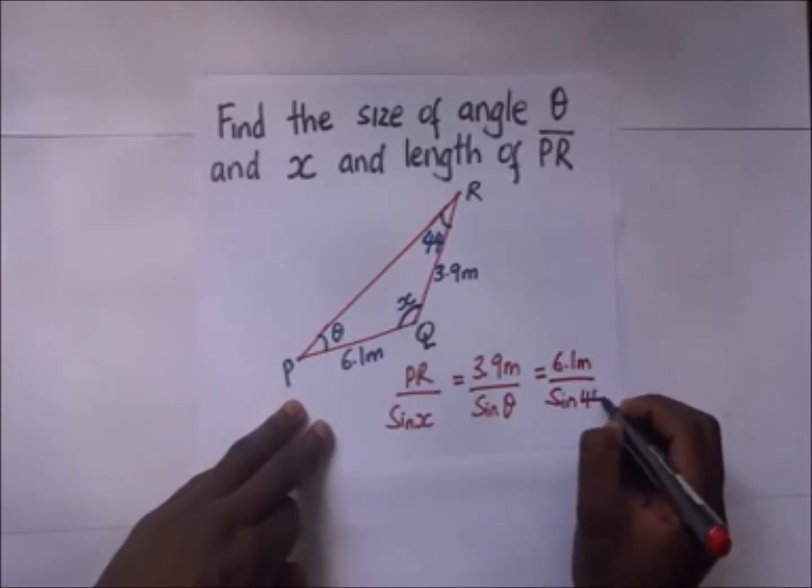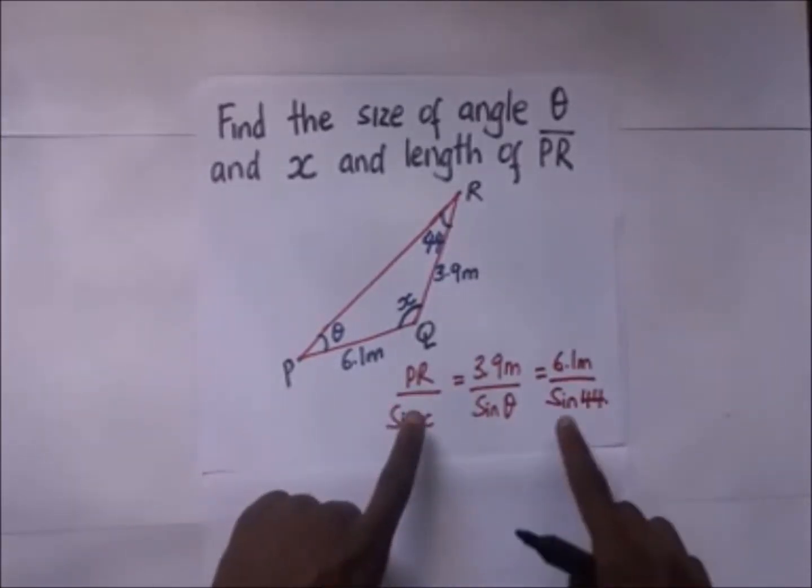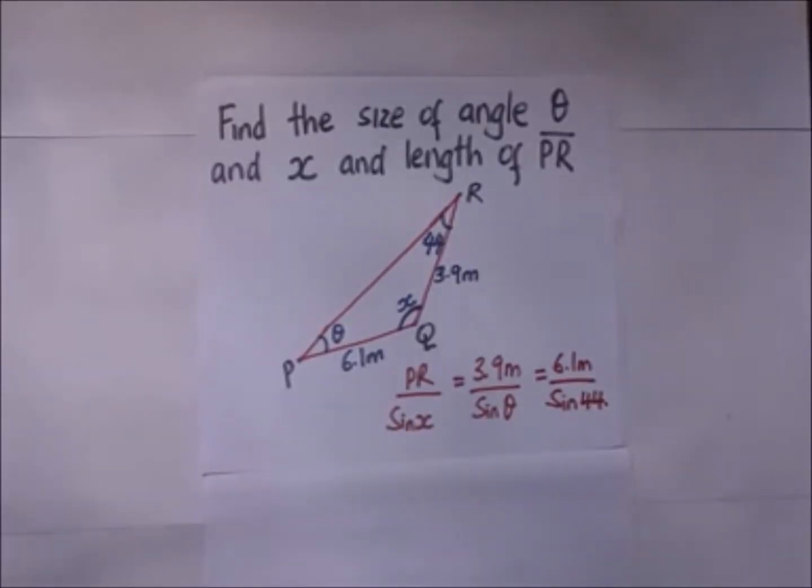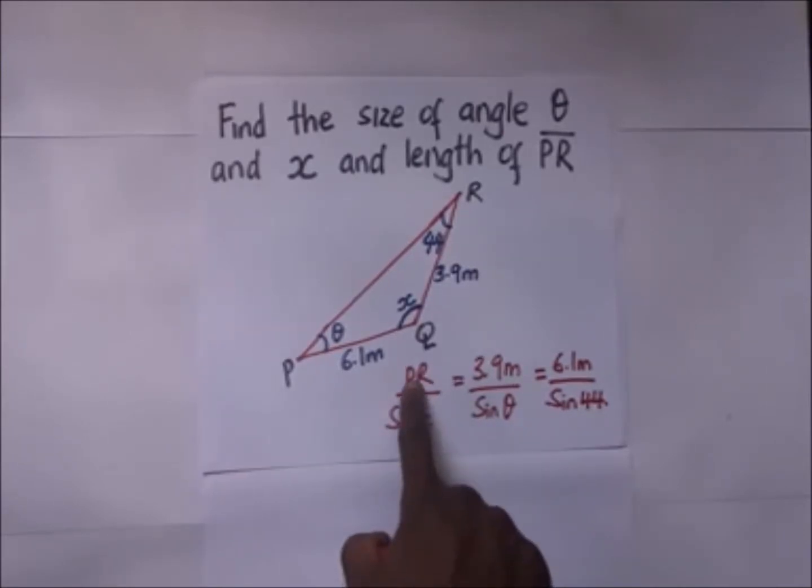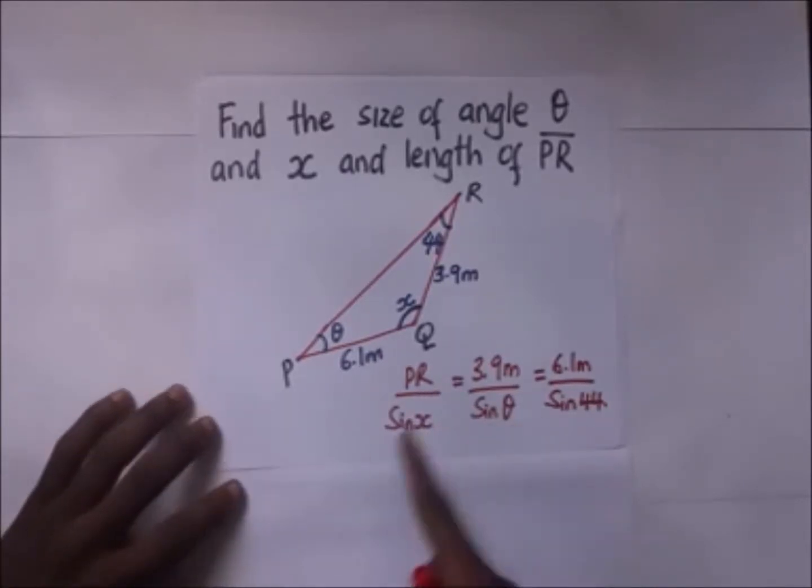So this is the sine rule. So we shall choose any two terms, we equate any two terms that we feel are convenient or that we feel are going to get us what we want. Now in this whole thing we are required to find x, we are required to find the length PR and to find theta. So we begin with what we can easily get from this relation.